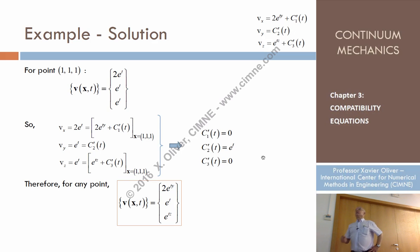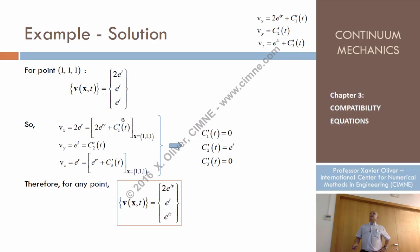To determine the constants, use the given boundary conditions: at point (1,1,1), the velocity takes the values (2ET, ET, ET). Evaluating the solution at (1,1,1), the terms cancel appropriately: c'1 = 0, c'2 = e^t, c'3 = 0. So the final velocity field is specified with these constants.